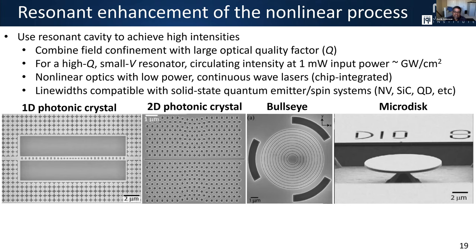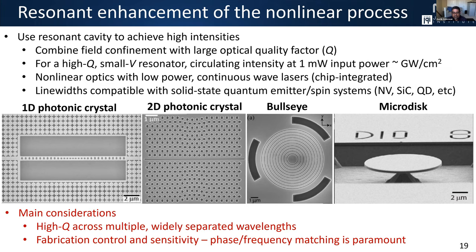There are a lot of different cavity geometries that people have developed. Our key criteria are that the cavity must have a high quality factor across a wide range of widely separated wavelengths, plus good fabrication control and relatively limited sensitivity to fabrication imperfections. Phase and frequency matching are paramount for getting the nonlinear process to work in the first place — above trying to get the highest-Q cavity or smallest mode volume cavity. We work with simple micro-ring resonators, which pretty much everybody in integrated photonics works with at some level, because it's quite straightforward to realize high cavity quality factors and small mode volumes across a very wide range of frequencies.